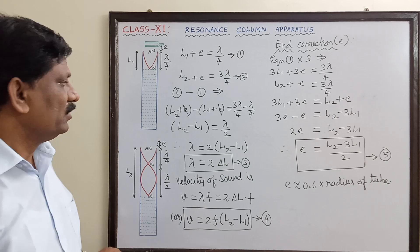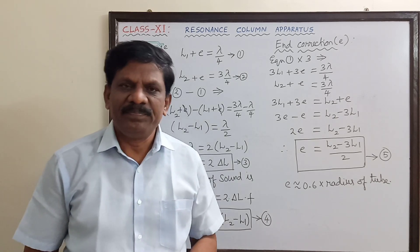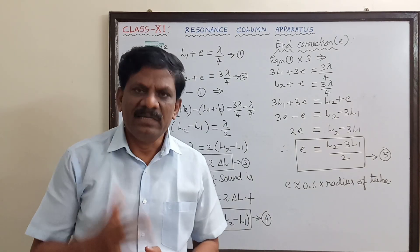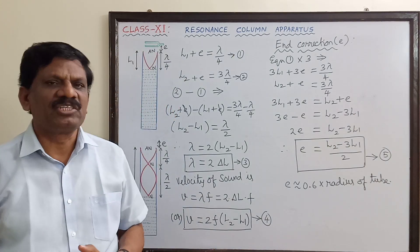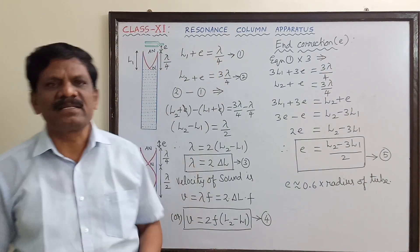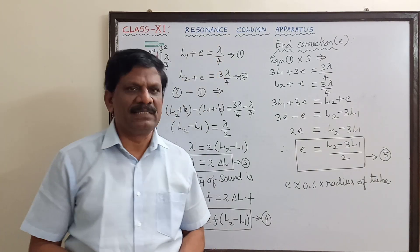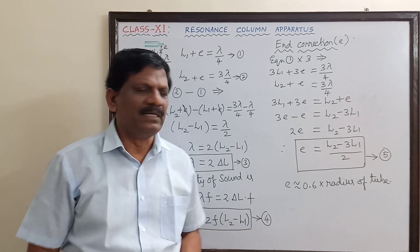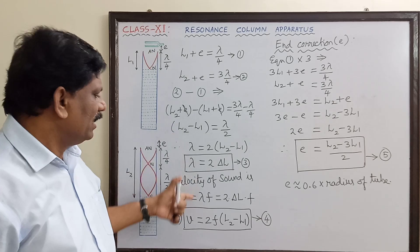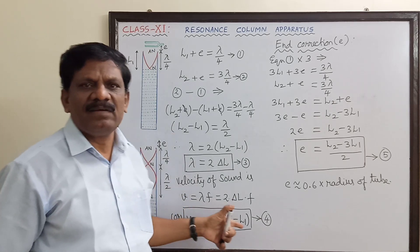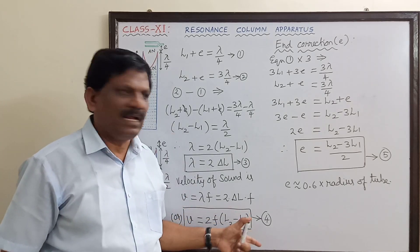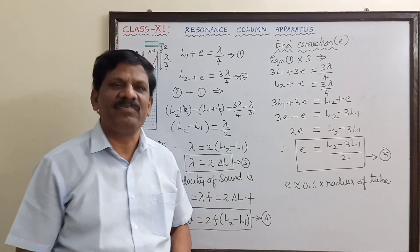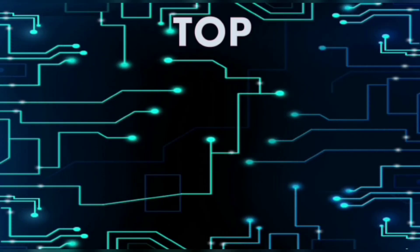What are the points you have to remember for the examination? You may be asked to describe the construction of a resonance column apparatus — write the brief construction — and derive expressions for the velocity of sound in air and the end correction. I hope you must have understood well.